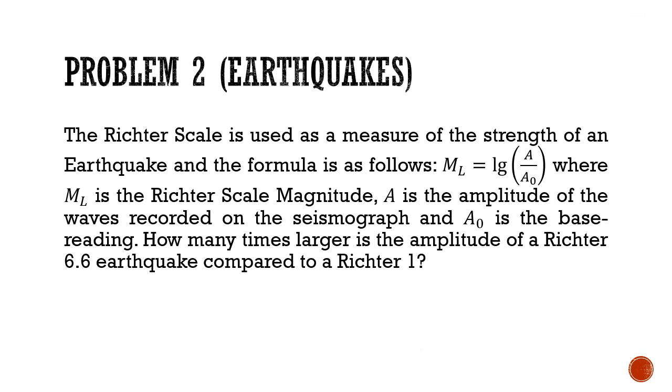So let's first sub in the Richter scale 1. So at ml equals 1, you will get log base a over a knot. So the amplitude of a Richter scale 1 earthquake is equal to a knot multiplied by 10. And when the Richter scale is 6.6, I can find that the amplitude of a 6.6 Richter earthquake is equal to a knot multiplied by 10 to the power of 6.6. So I have two equations.